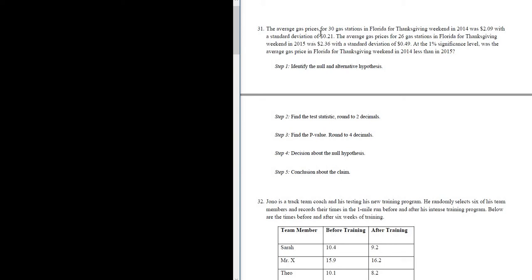Let's do problem number 31. The average gas prices for 30 gas stations in Florida for Thanksgiving weekend in 2014 was $2.09 with a standard deviation of $0.21. The average gas prices for 26 gas stations in Florida for Thanksgiving weekend in 2015 was $2.36 with a standard deviation of $0.49. At the 1% significance level, was the average gas price in Florida for Thanksgiving weekend in 2014 less than in 2015? So it sounds like they're asking us to compare two means. We're going to do a hypothesis test for two means. Before we do it, let's go ahead and carefully reread the question and write everything down.